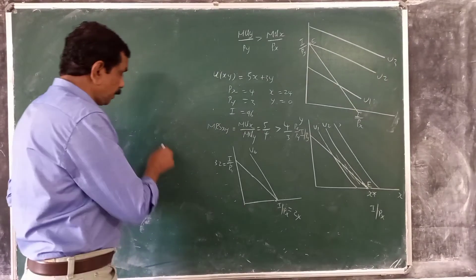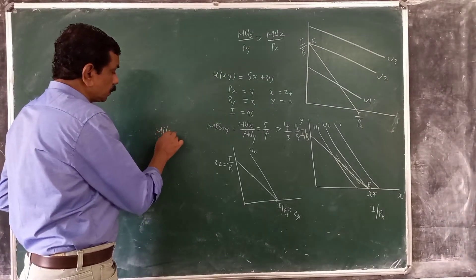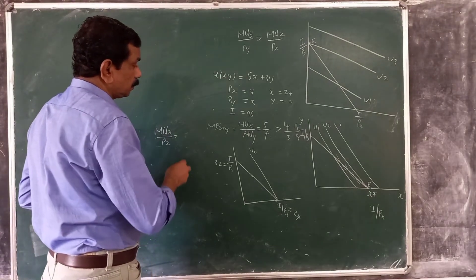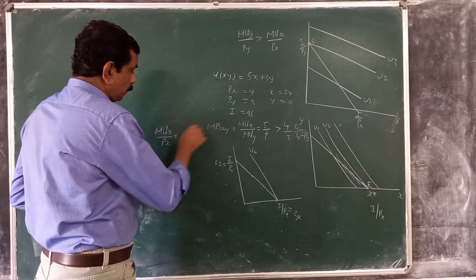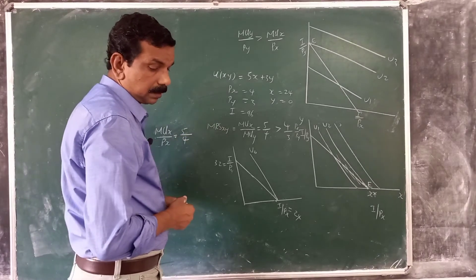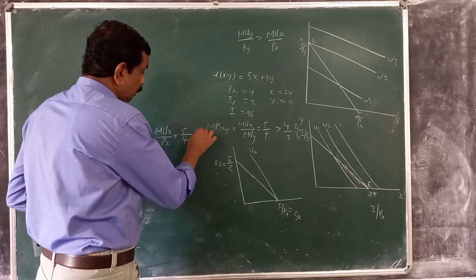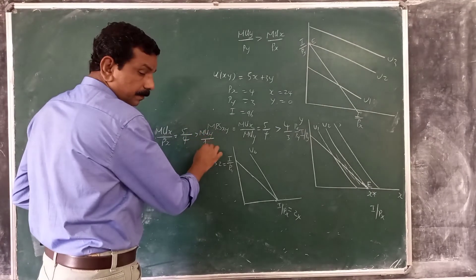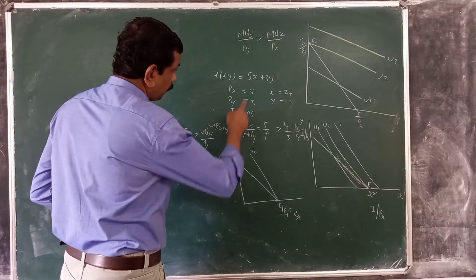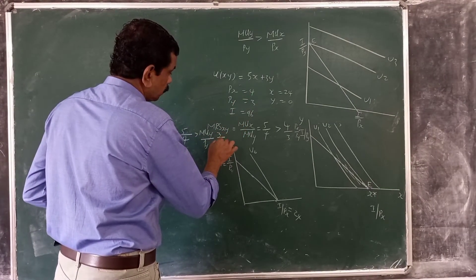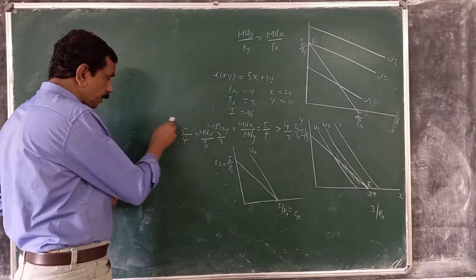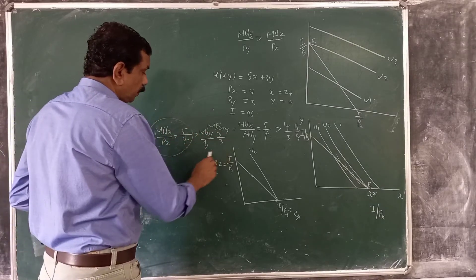MUx/Px in this case equals 5/4, which is greater than MUy/Py. MUy/Py = 3/3 = 1, so 5/4 > 1. Thus MUx/Px is greater than MUy/Py.